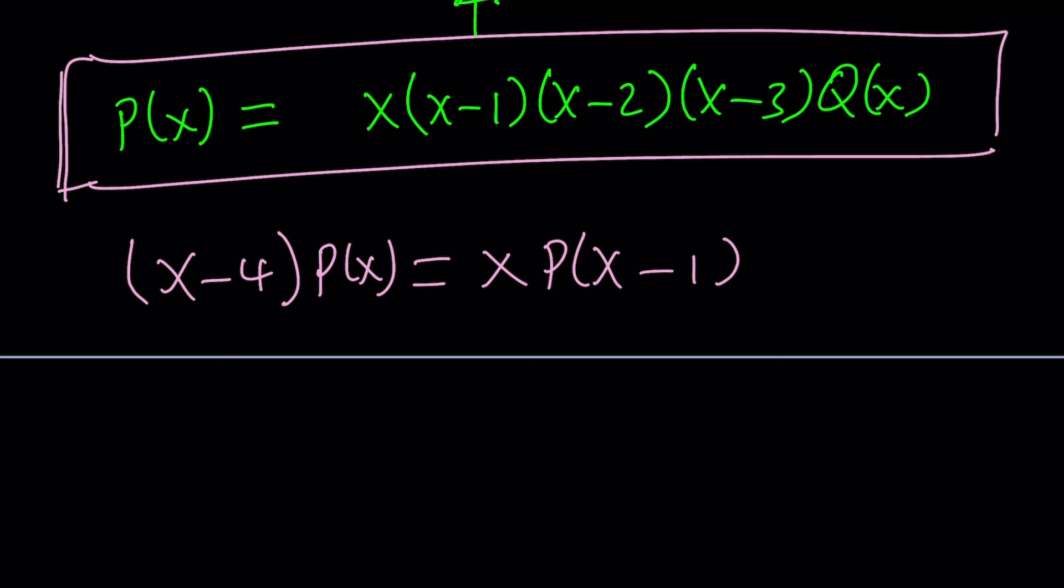What is X minus 4? X minus 4 is just X minus 4. What is P of X? X times X minus 1 times X minus 2 times X minus 3 times Q of X.